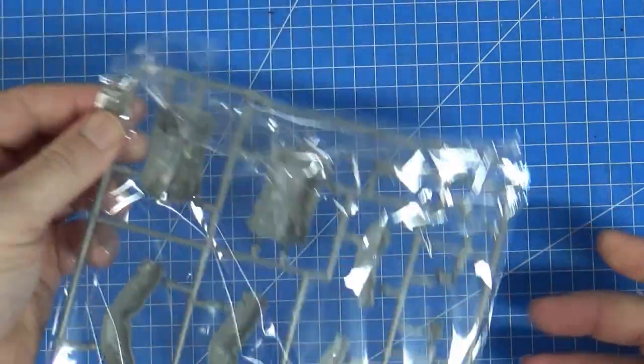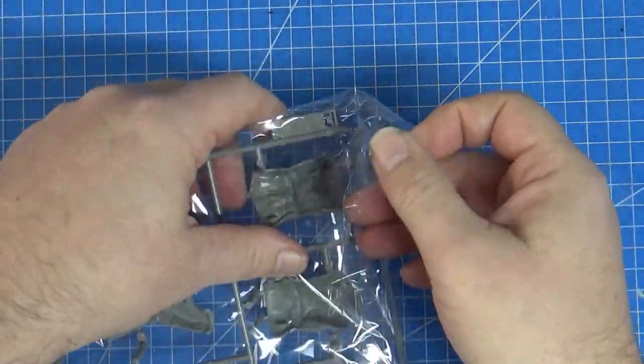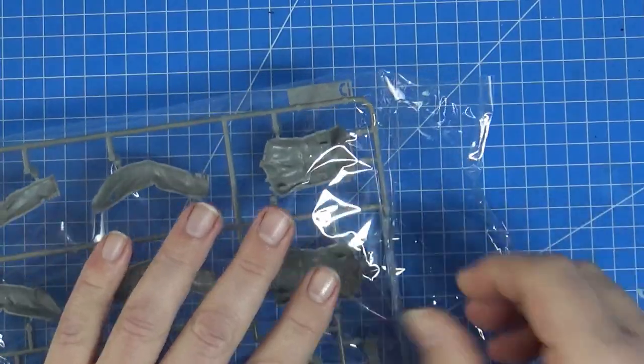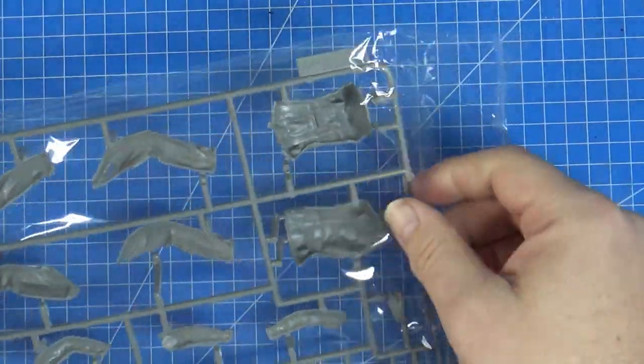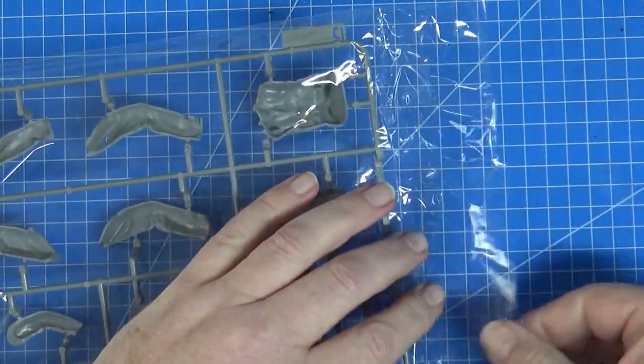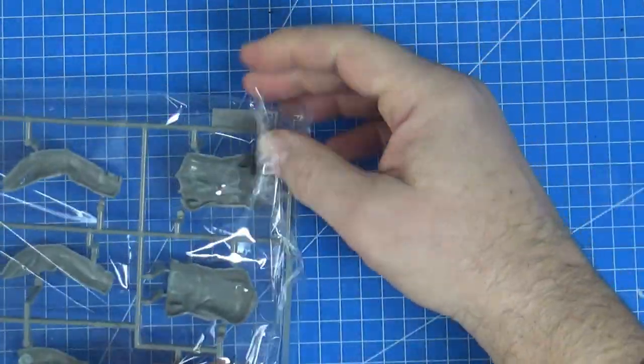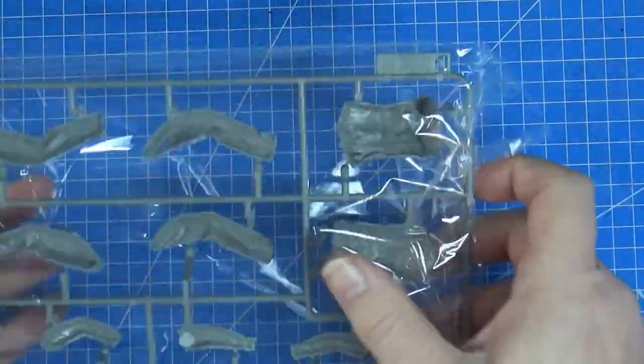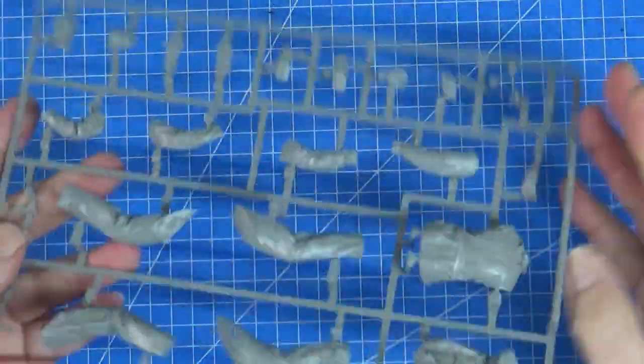And the final sprue is the pilot, which I've left in the bag just to show how Takom does this quite well. No staples like Tamiya. Tamiya, why do you put staples in your bag? And it reseals. There's a little bit of stickiness, tackiness to the end of that tape. So you can seal it back up again. All right, let's take him out and have a look.